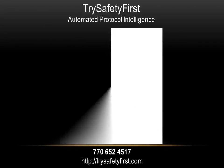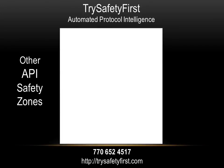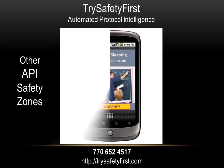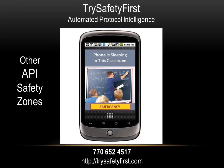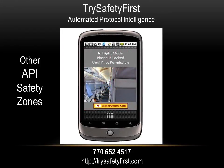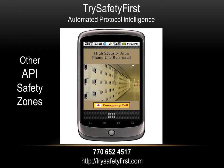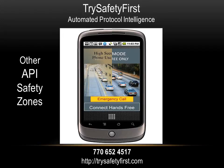In addition to the prison environment, other safety zones for which TriSafety First has also invented API technology include: the classroom, to give the teacher override control; the courtroom, to give a judge override control; the airplane, to give the pilot override control; high security areas; and of course the driver seat, to prevent texting behind the wheel.